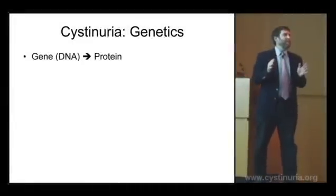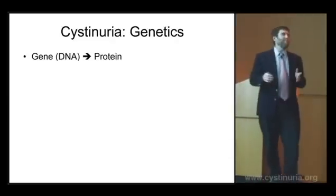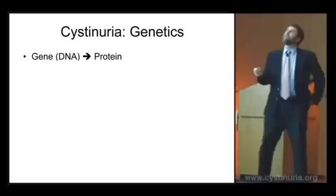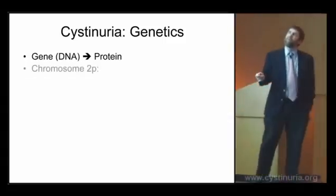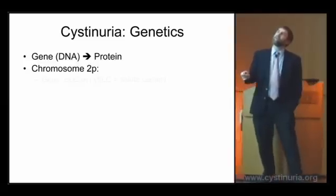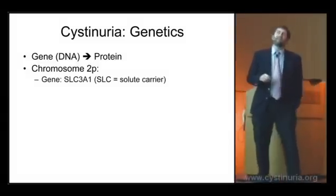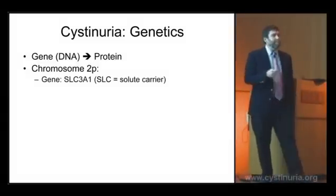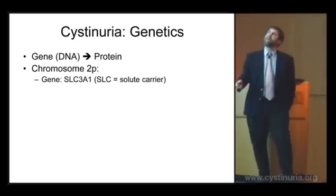A gene is a section of DNA, a length of DNA that codes for a protein. A protein is a chain of amino acids, and there are two important genes that we're going to talk about. One is on chromosome 2p. This gene is called SLC3A1. SLC stands for solute carrier — it transports something from one side of a membrane to the other side.